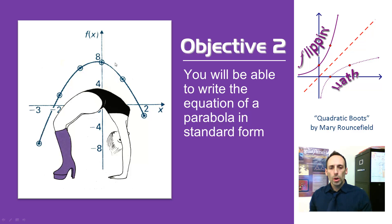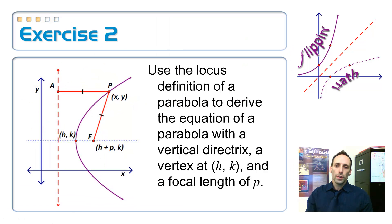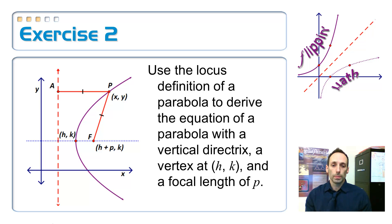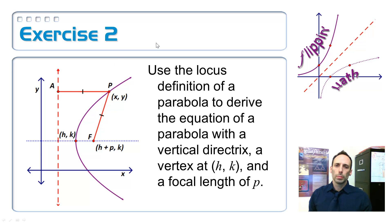So let's come up with the equation of a parabola in standard form. We're going to use the locus definition of a parabola to come up with an equation for this thing, just like I did with a circle. So using all these points, we're using the vertical directrix. You're going to do the one for a horizontal directrix as part of your homework, and it will proceed in basically the same way. So your x's and your y's are going to be kind of switched.